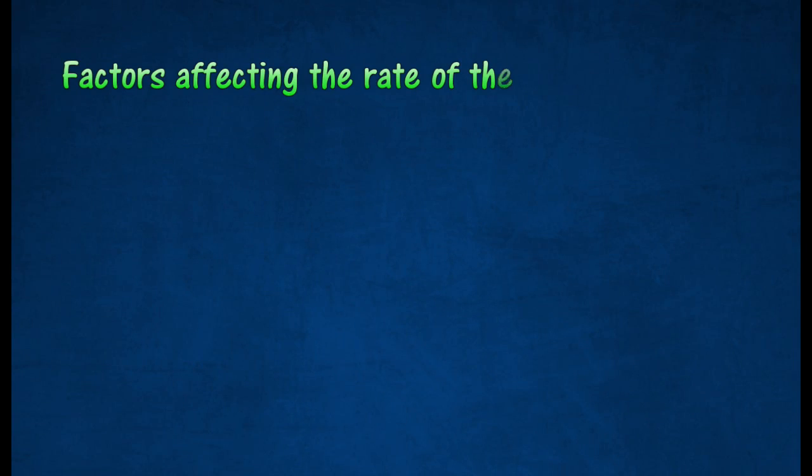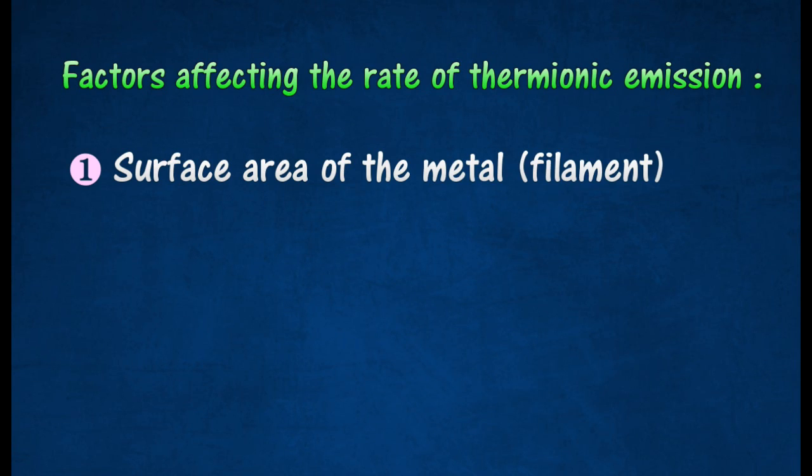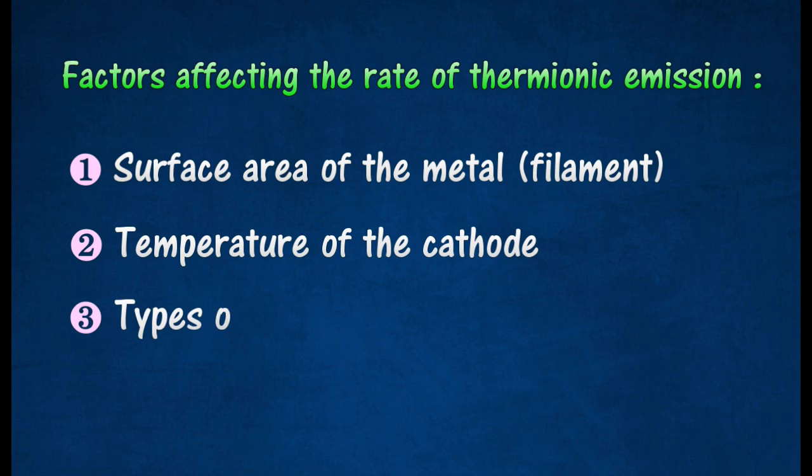The rate of thermionic emission can be increased by increasing the surface area of the metal, raising the temperature of the metal, and coating the metal cathode with oxides of alkali earth metals.